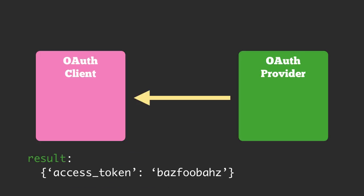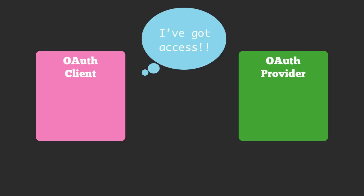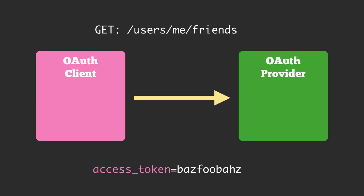Once the OAuth provider gets all of those and all of those are correct, then it will send back an access token to the OAuth client. The OAuth client then has access and can do anything like a user would be able to — they just send the access token along with any URL requests to the OAuth provider.